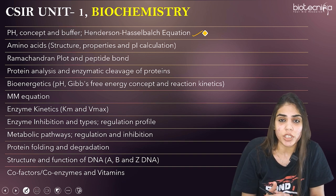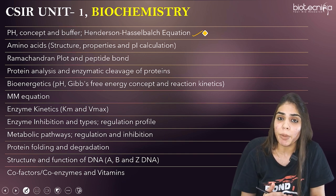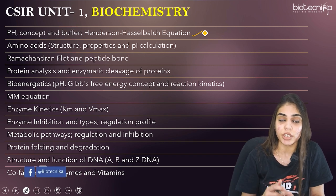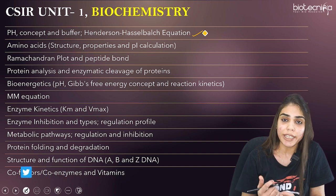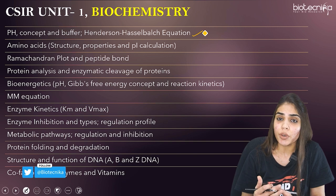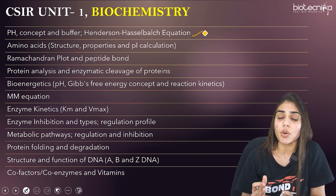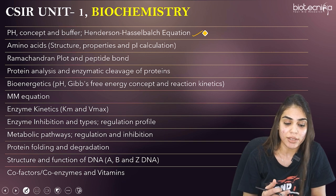The second important topic is amino acids. You should know their classification, properties, and everything about amino acids — structure, properties, as well as classification. You should know about basic amino acids, acidic amino acids, OH group-containing amino acids, and also PI calculation. If you are given a numerical, you should know how to calculate the PI of a given protein or amino acid.